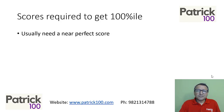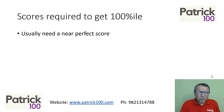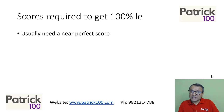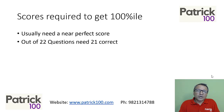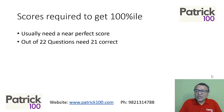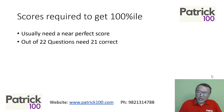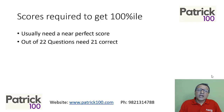Scores required to get 100 percentile — normally you need a perfect or almost perfect score. Out of 22 questions, technically you would need around 20 to 21 correct to get 100 percentile.